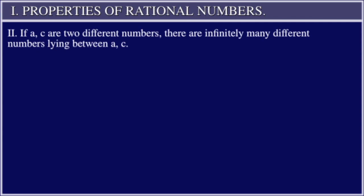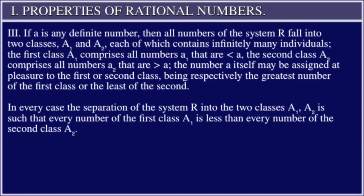II. If a and c are two different numbers, there are infinitely many different numbers lying between a and c. III. If a is any definite number, then all numbers of the system R fall into two classes, A₁ and A₂, each of which contains infinitely many individuals. The first class A₁ comprises all numbers a₁ that are < a.